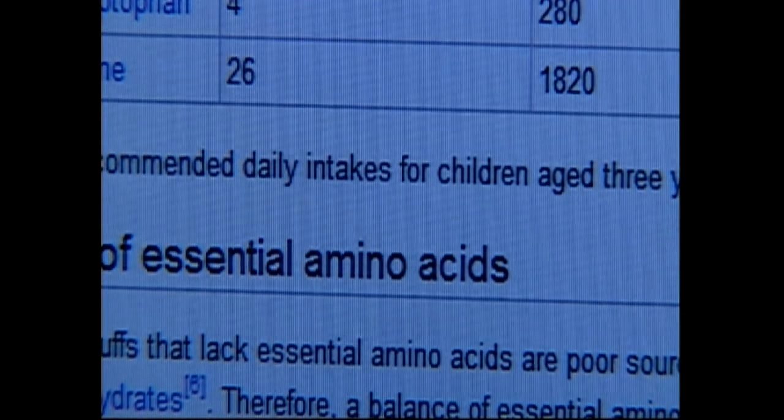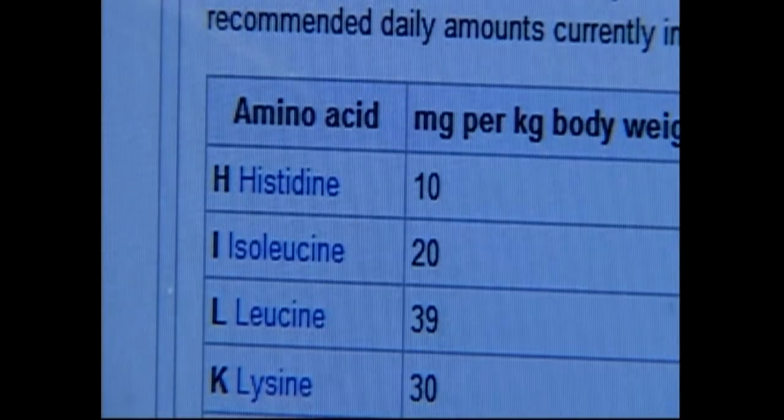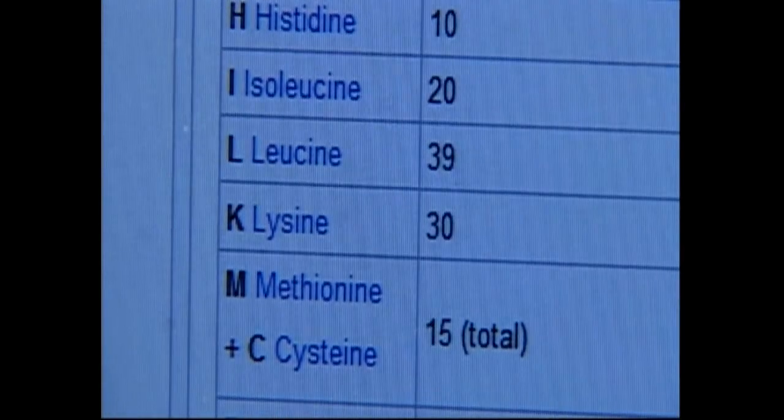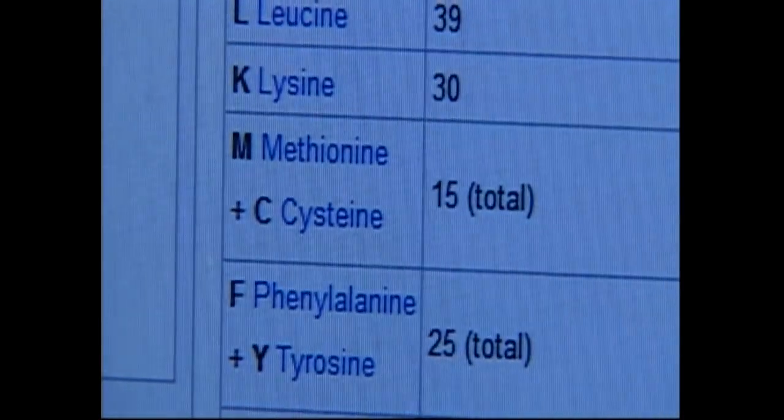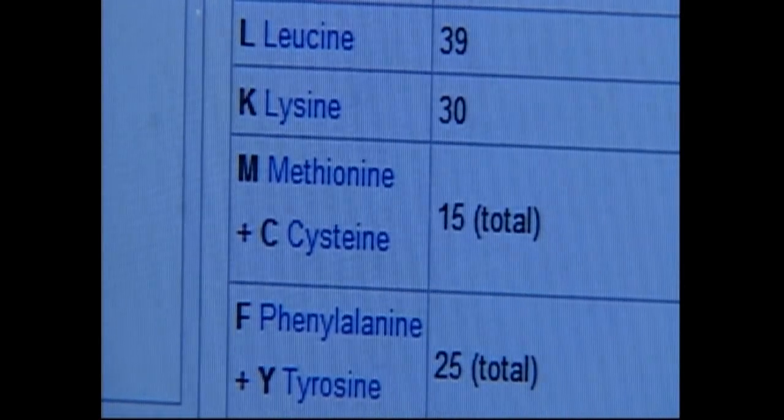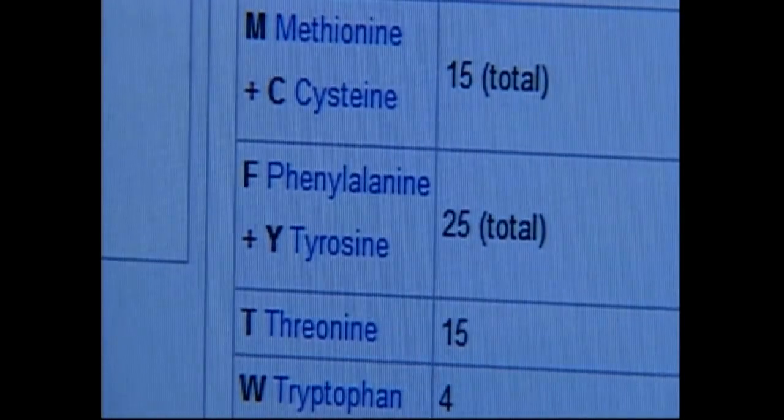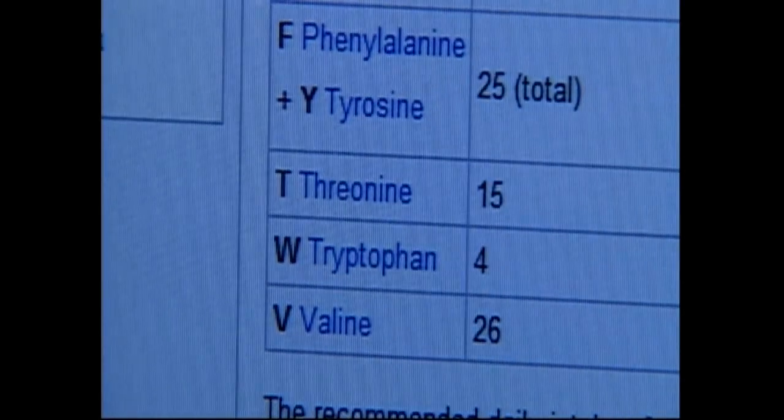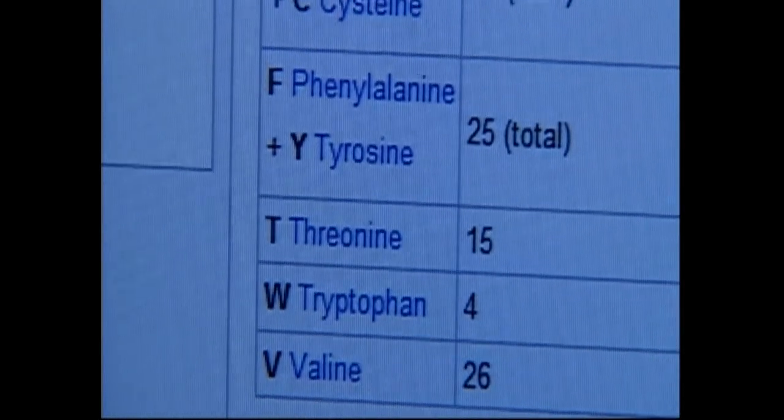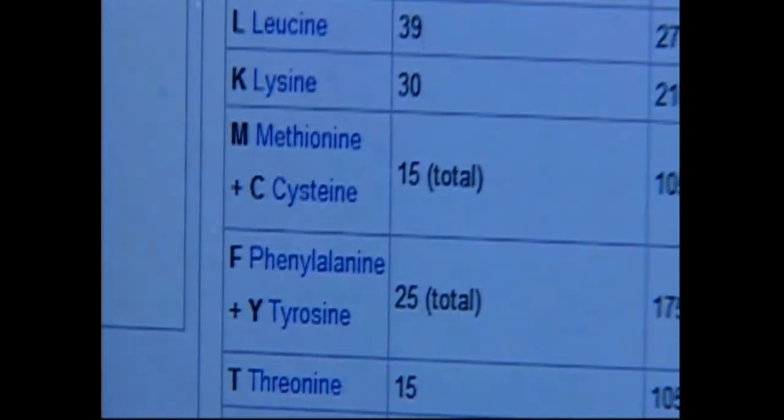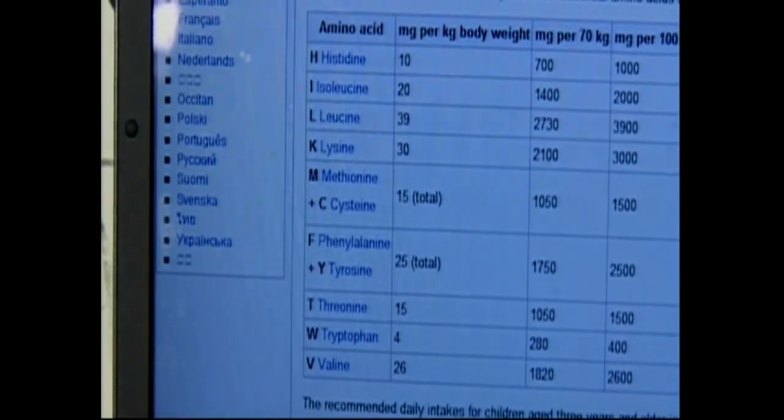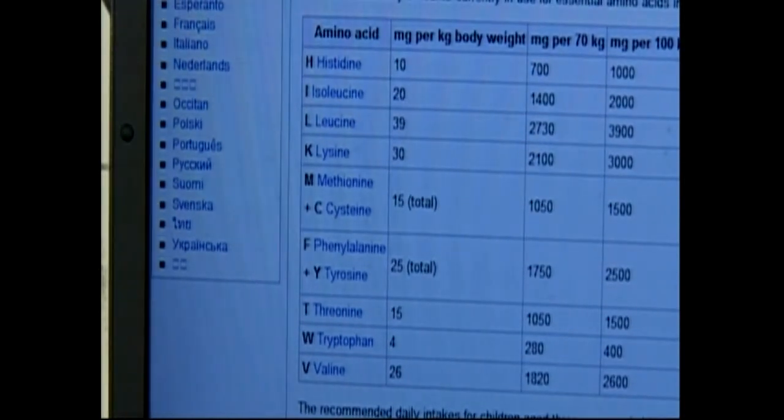Okay, essential amino acids. We finally, it's all we can find here. Off the computer screen. We've got histidine, isoleucine, leucine, lysine, methionine, and cysteine, phenylalanine and tyrosine, those are the two rings, threonine, that's an alcohol, tryptophan, and valine. So now what we're going to do is we're going to look these up on our thing and we're going to make them with a balloon. How's that sound? These are the essential amino acids there.